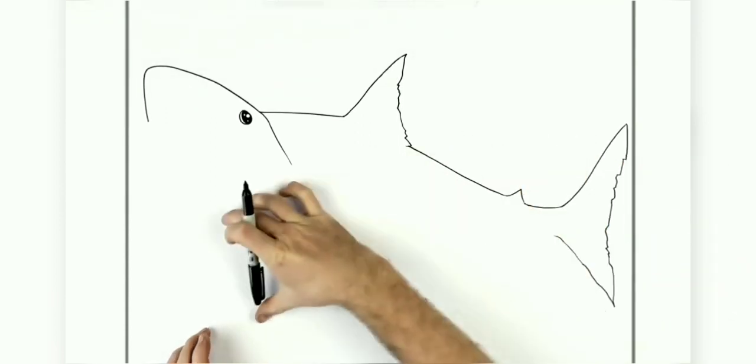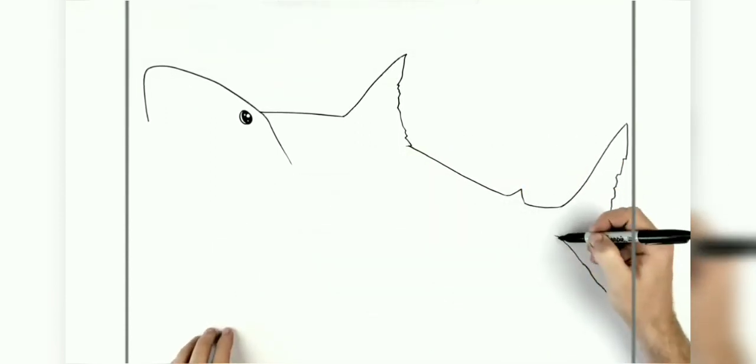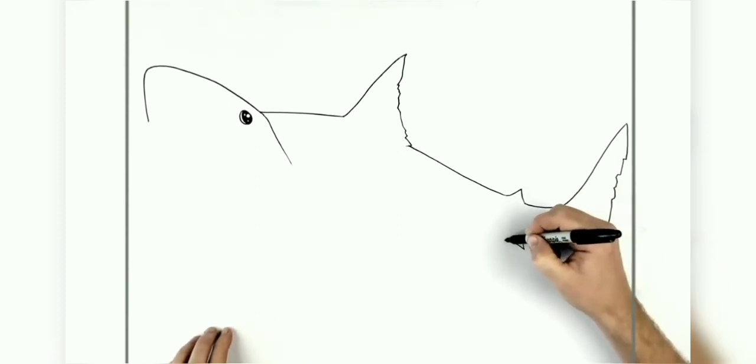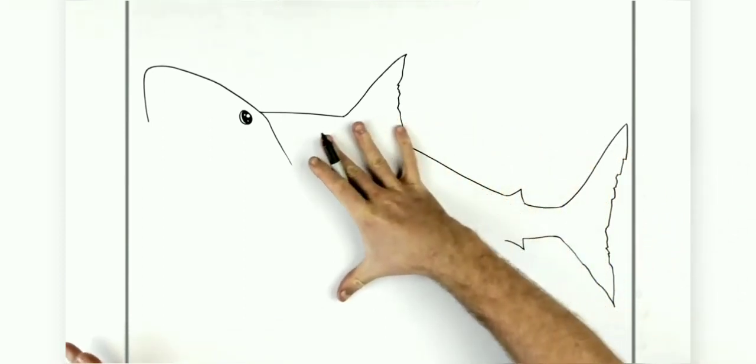Now this will come back this way. So we'll go back like so. And another little fin below this one, and we're gradually going to make it wider all the way up to his mouth.